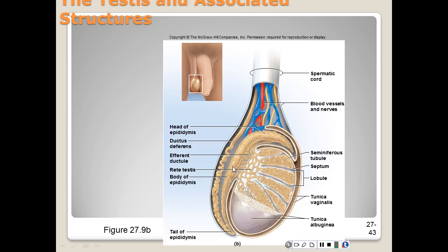The epididymis is a site of sperm maturity as well as storage. After sperm is produced it is put into the epididymis, where it begins to mature. The epididymis has a club-like head, a medium-sized body, and a very slender tail. It consists of a single coiled duct about six meters — or 18 feet — long, embedded in connective tissue. This duct reabsorbs about 90% of the fluid secreted by the testes. Sperm takes about 20 days to reach the tail of the epididymis, where it is stored.